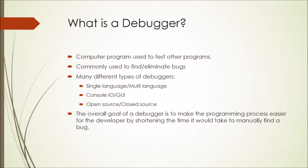If you are new to the computer science field, then you may not know what a debugger is. A debugger is a computer program that is used to test other programs. It's commonly used after a program is written, or while it is being written, to find bugs and errors that the programmer may have missed.